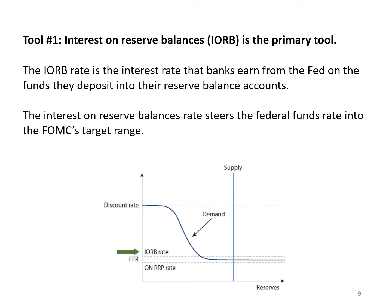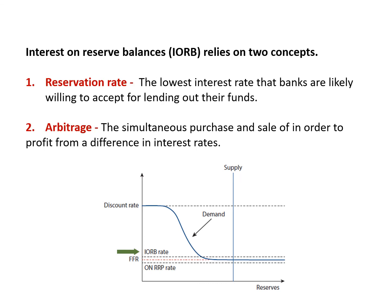Interest on reserve balances is the primary tool in the Fed's toolbox. The interest on reserve balances rate is the interest rate that banks earn from the Fed when they deposit funds in their reserve account. There are two key concepts to remember for understanding interest on reserve balances: reservation rate and arbitrage. These two concepts show how interest on reserve balances steers the federal funds rate and other short-term interest rates toward the FOMC's target range for the policy rate.